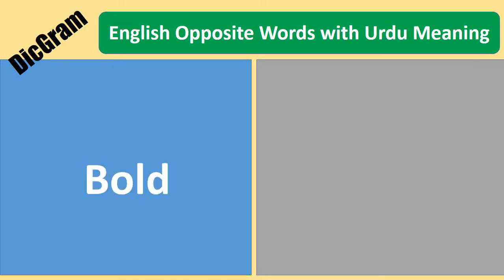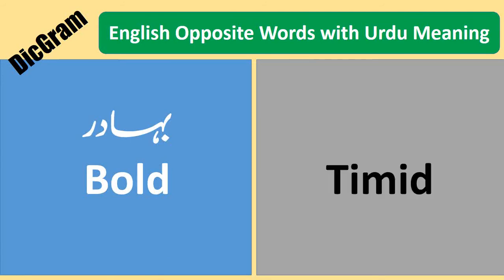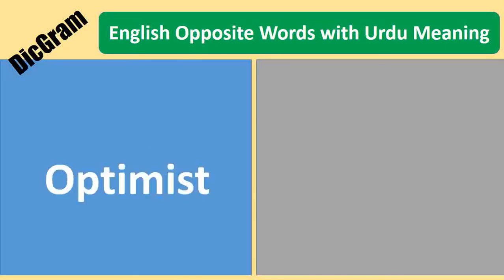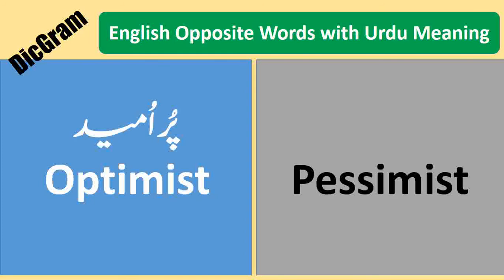Bold — Bahadur. Timid — Budil. Optimist — Puramid. Pessimist — Mayous.